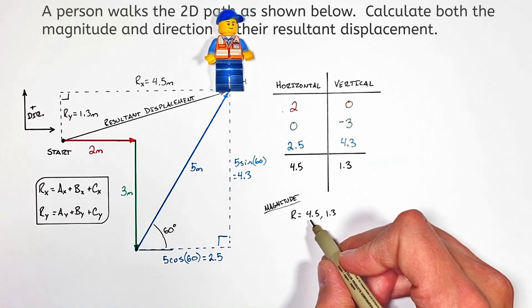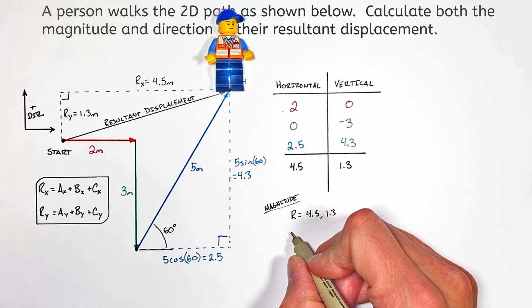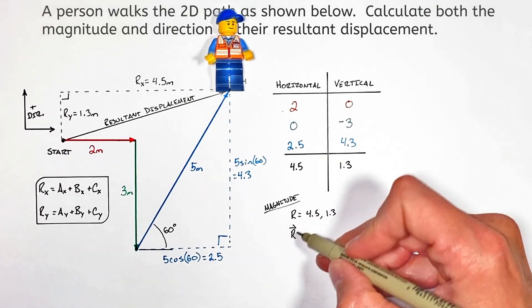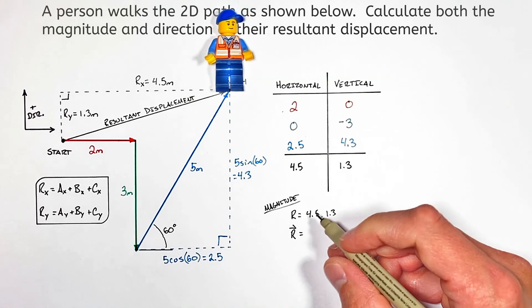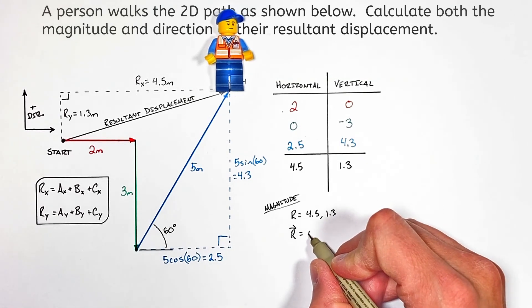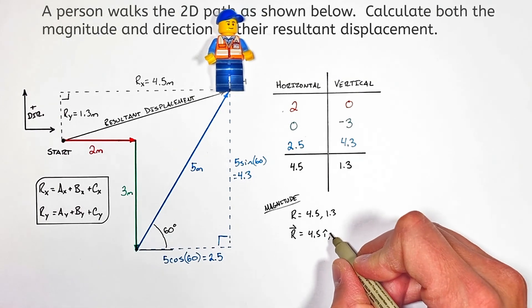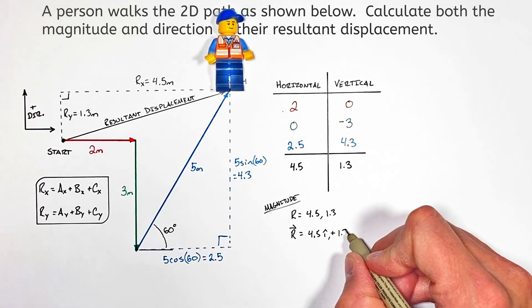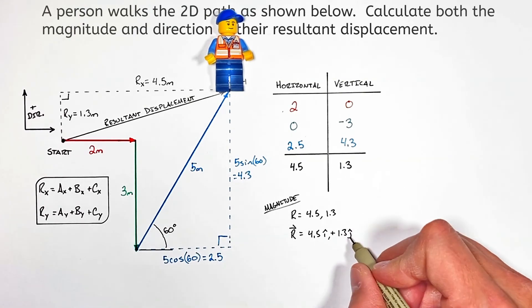You might see them in math class listed as x and y components. Sometimes in physics you'll see a vector shown with a vector symbol over it—it looks like an arrow. You'll see the vector written out as the x component with a little i next to it plus 1.3 with a little j next to it. Now let me explain this i and j.